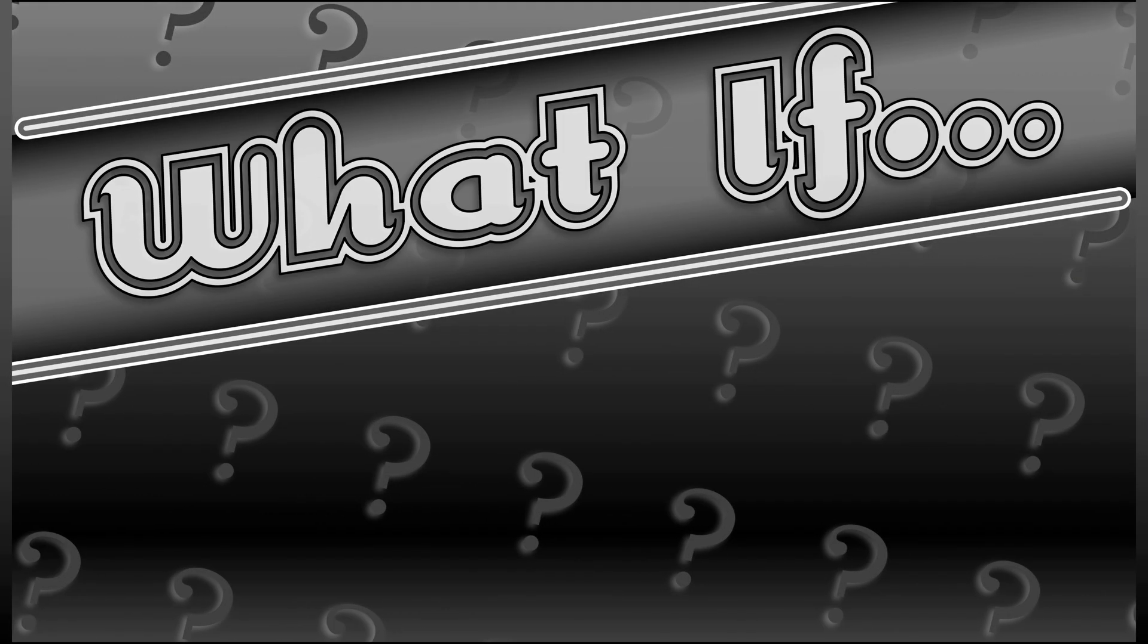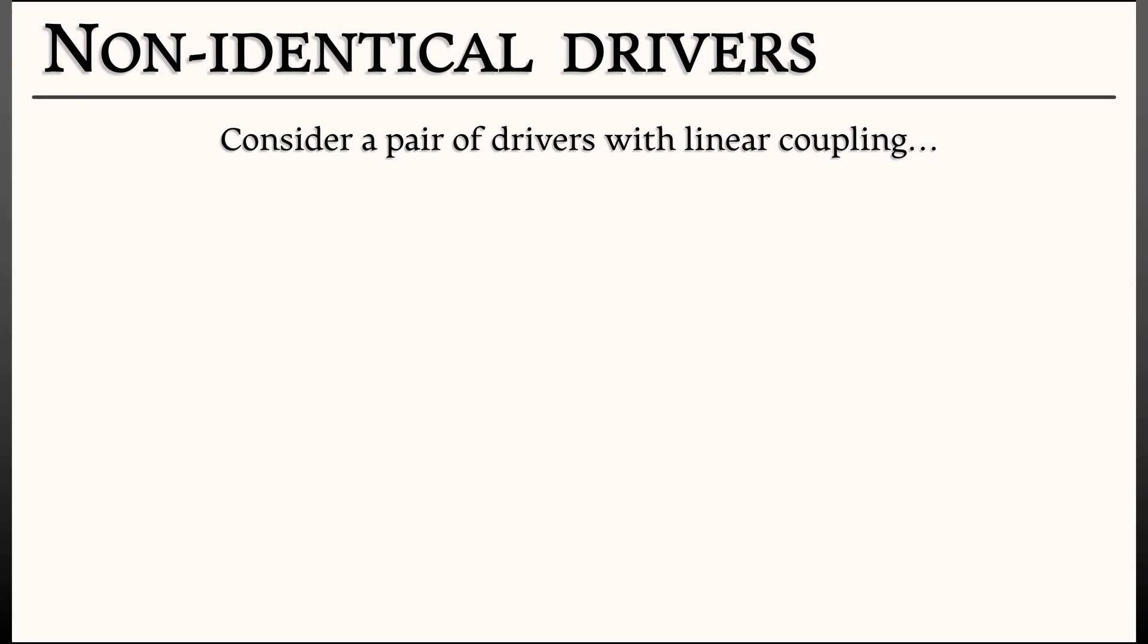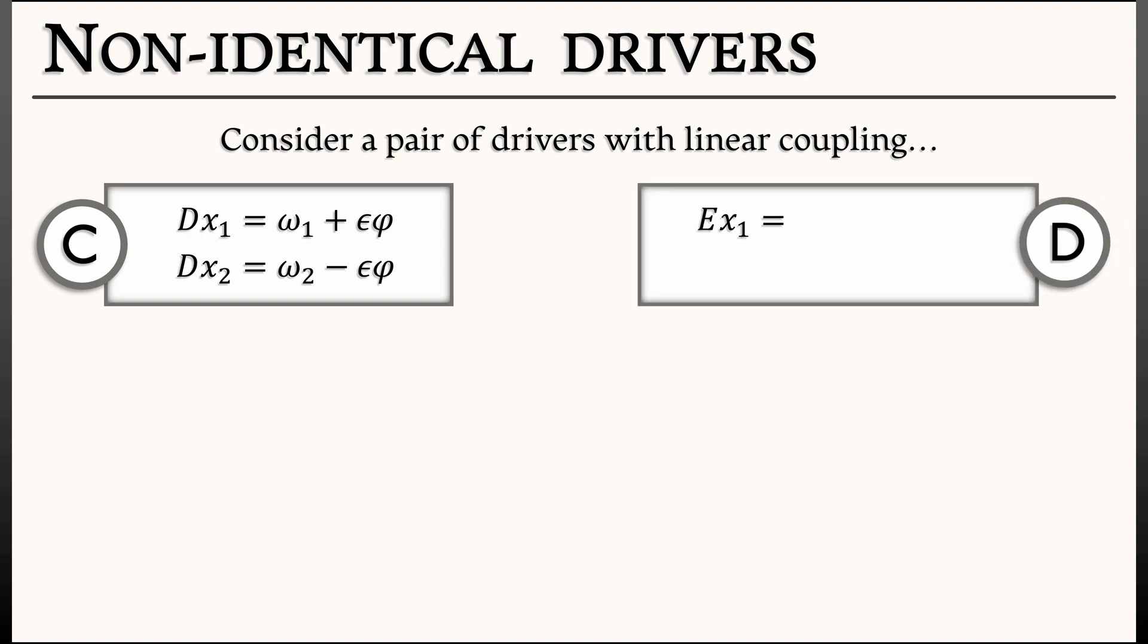I wonder what happens if we start changing things. What happens if we have non-identical agents? Let's start with drivers—a pair of drivers with linear coupling f(φ) = φ. Then in continuous time, we have dx₁ = ω + ε φ, dx₂ = ω - ε φ. Similar in discrete time where you have x₁ or x₂ on the right-hand side as well.